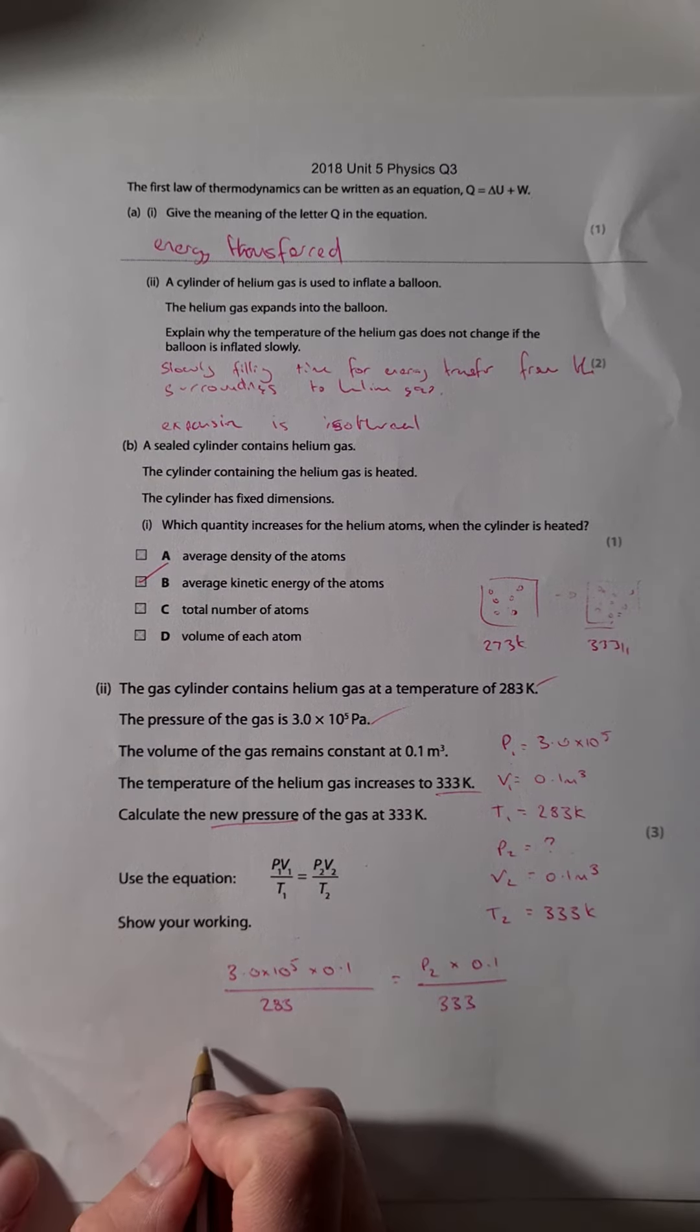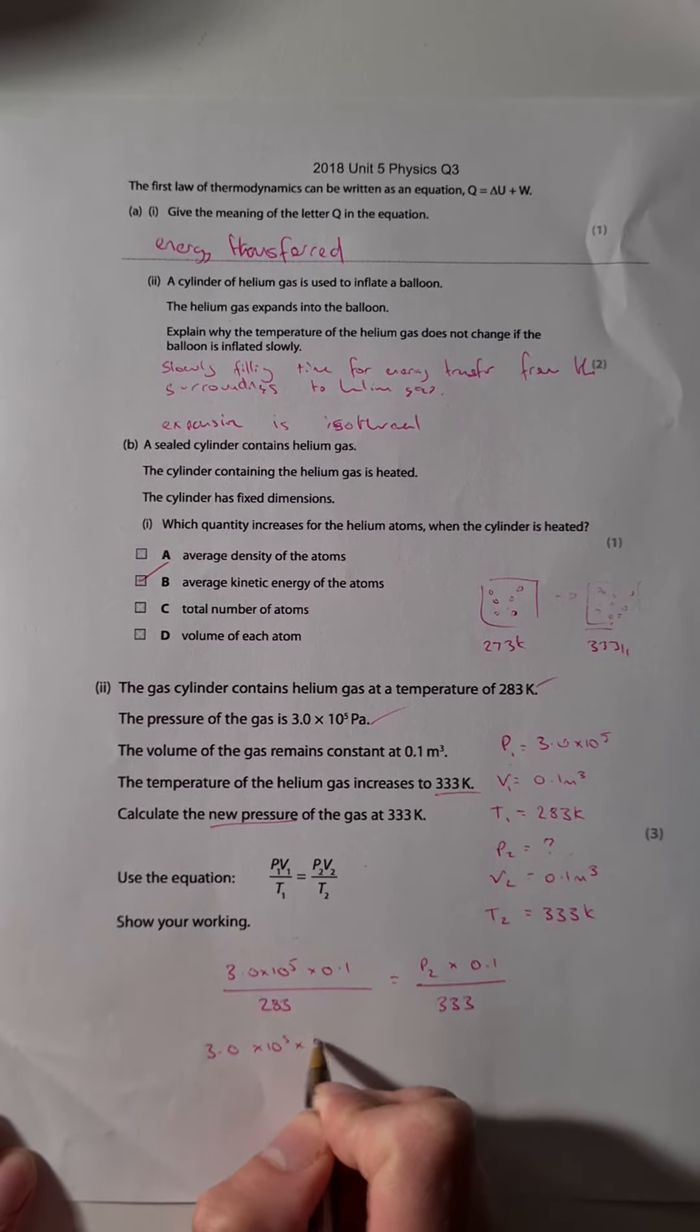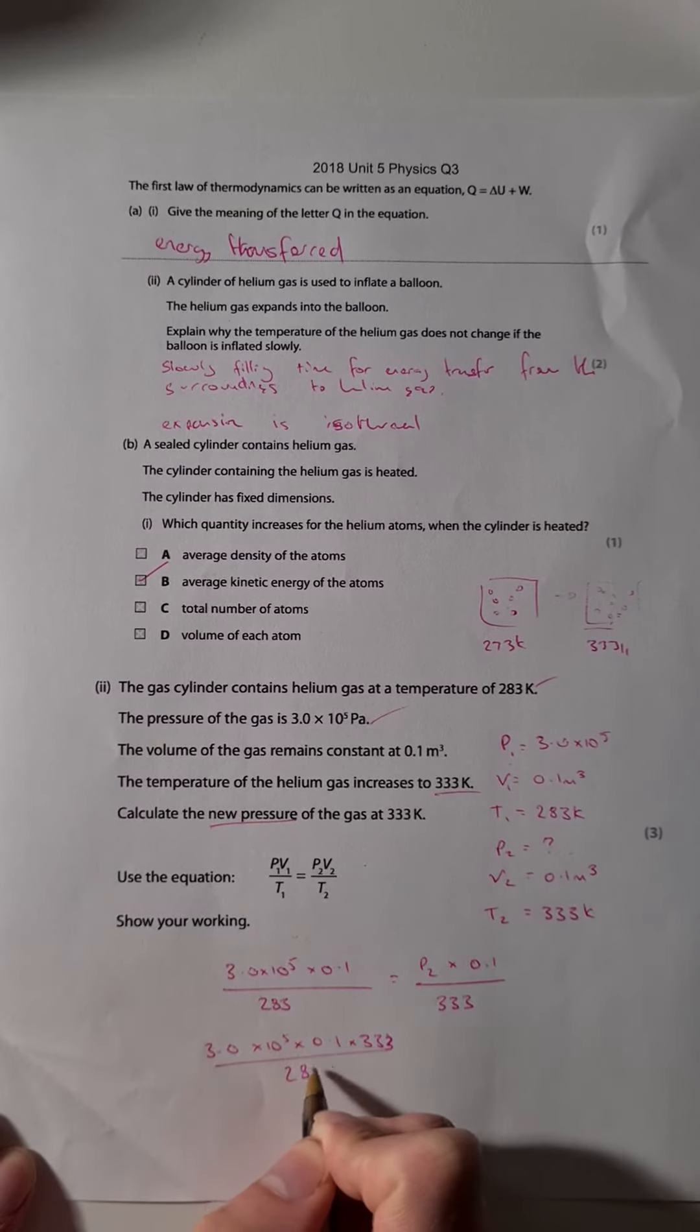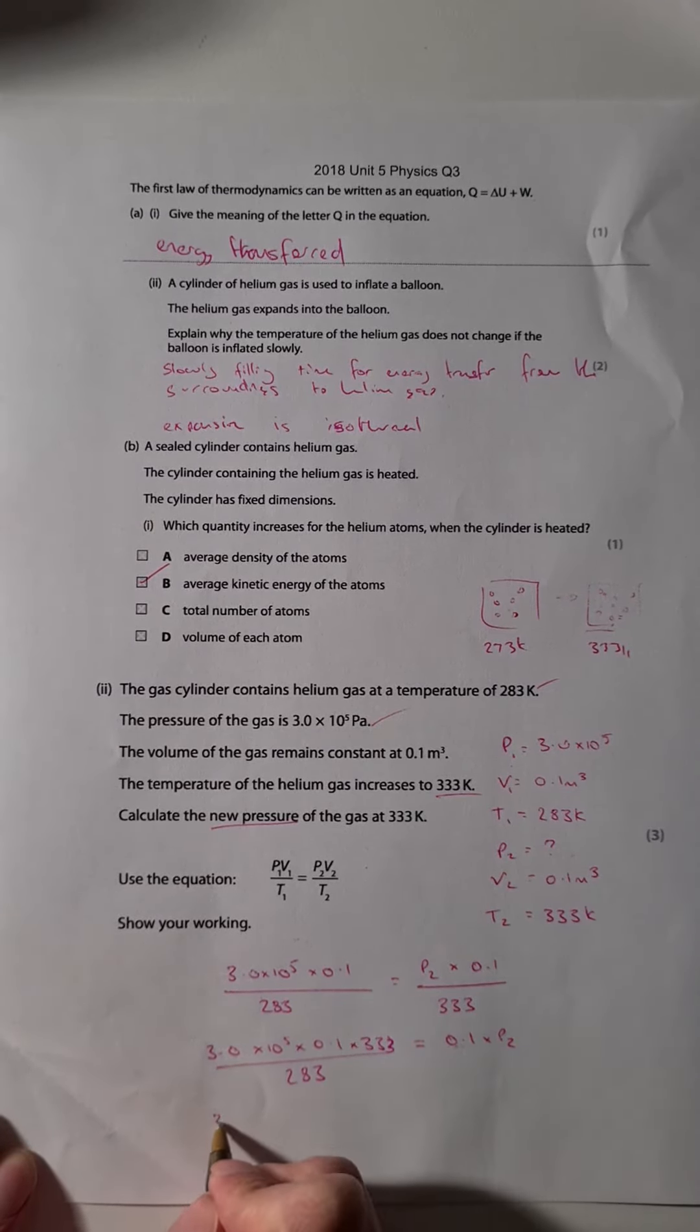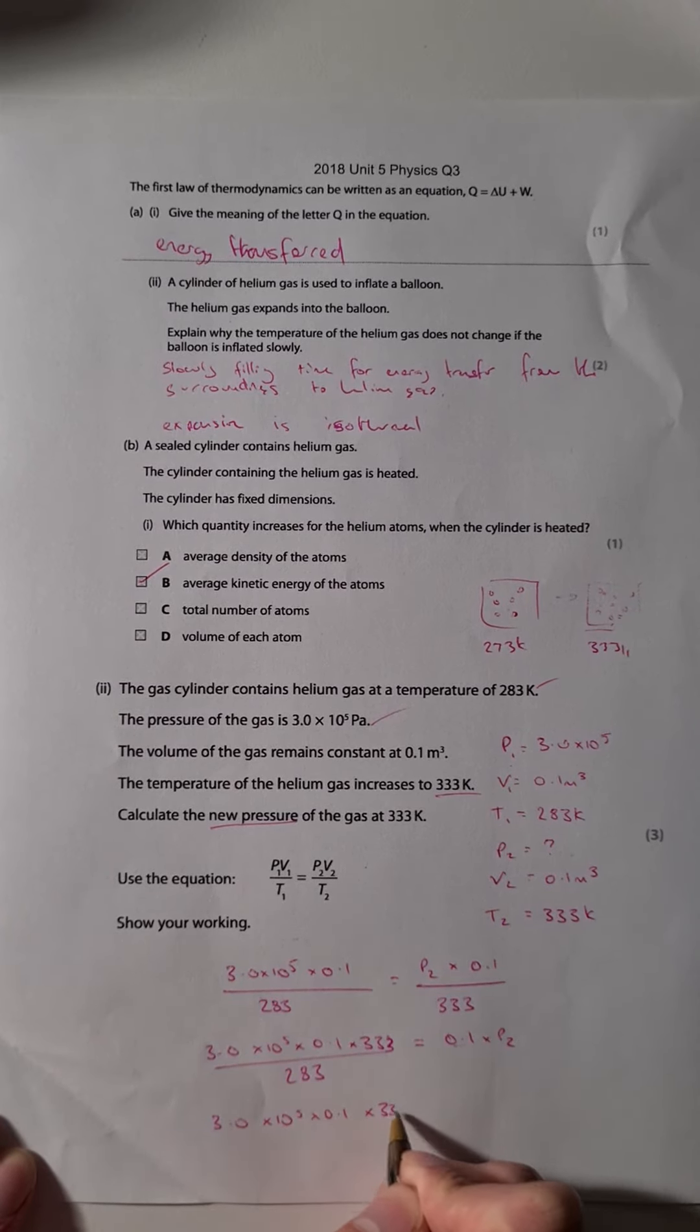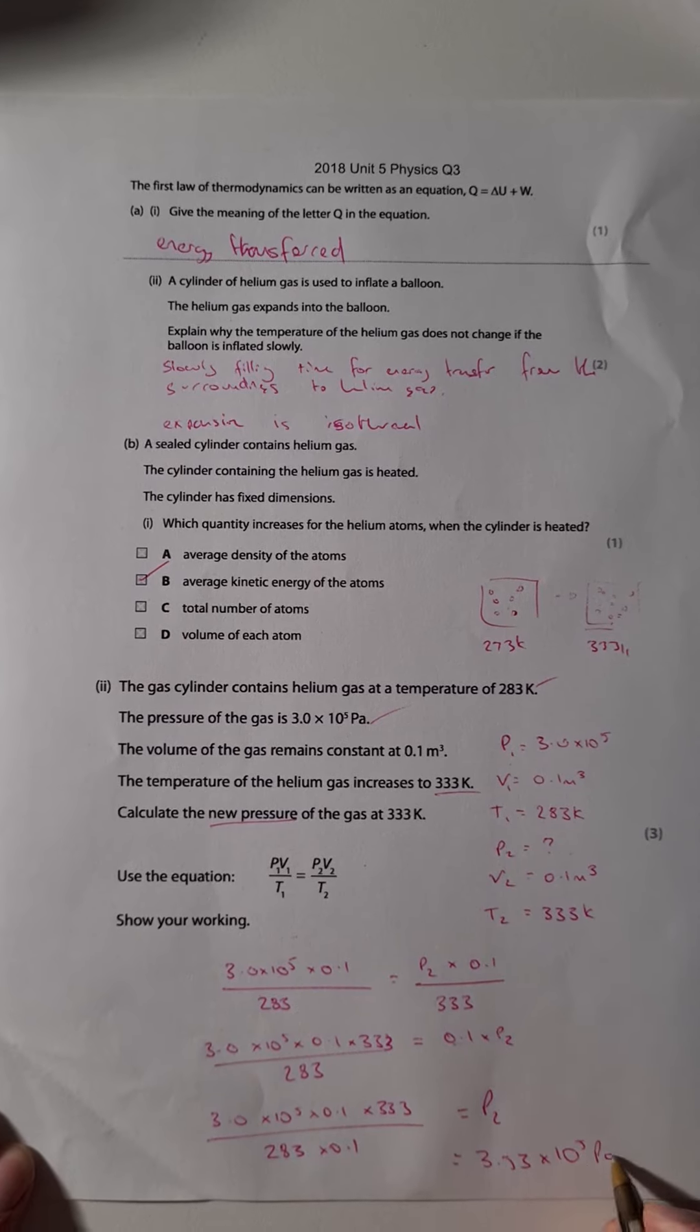Rearranging, we're going to times by 333 both sides. That gets 3 times 10 to the 5 times 0.1 times 333 over 283 equals 0.1 times P2. So I'm going to divide by 0.1. I'll get 3 times 10 to the 5 times 0.1 times 333 over 283 times 0.1 equals P2. And if I times all that out, I get 3.53 times 10 to the 5 Pascals.